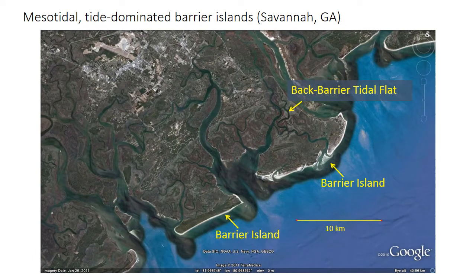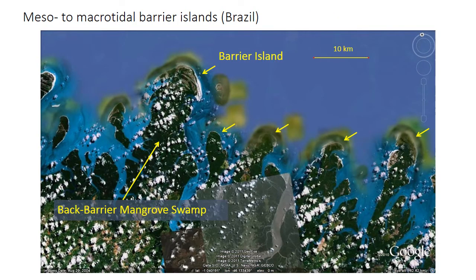On a more mesotidal coastline, the barrier islands are more discontinuous, the tidal inlets are larger, and they're more closely spaced. The back barrier region is dominated by tidal flats rather than lagoons, because of the somewhat higher tidal range. As the tidal range increases even more, the barriers themselves become very small and widely spaced. The reason is that when tidal range is high, a huge volume of water needs to be moved from the open ocean to behind the barriers and back every 12 hours, requiring a lot of very large tidal inlets.